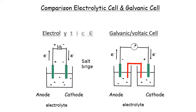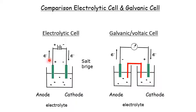Comparing the two diagrams: an electrolytic cell uses one solution with one electrolyte and one beaker, while a galvanic cell has two beakers with two different solutions. The electron flow concept is the same — from anode to cathode — but the terminal polarity differs. For an electrolytic cell, the anode is the positive terminal and cathode is the negative terminal, whereas for a galvanic cell, the anode is the negative terminal and cathode is the positive terminal.